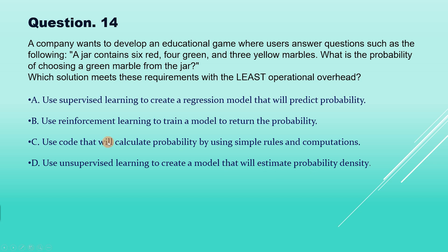It may be surprising, but the correct answer is option C: use code that will calculate probability by using simple rules and computation. The keyword here is 'least operational overhead.' If simple code can fulfill the requirement, we are not supposed to use AI. We are not supposed to give a fancy answer like supervised learning or reinforcement learning when simple code meets the need.